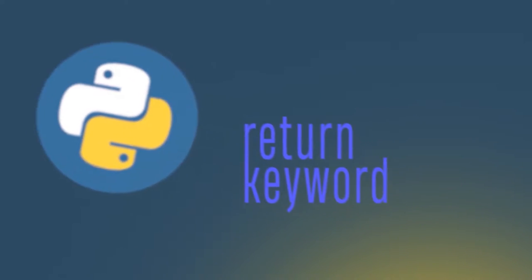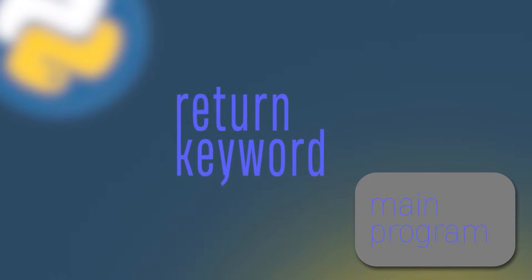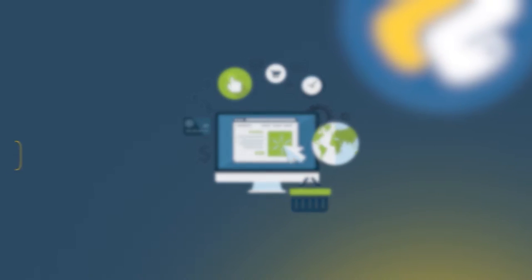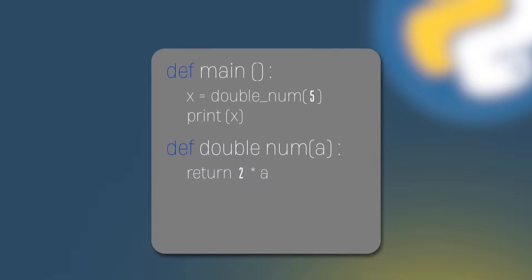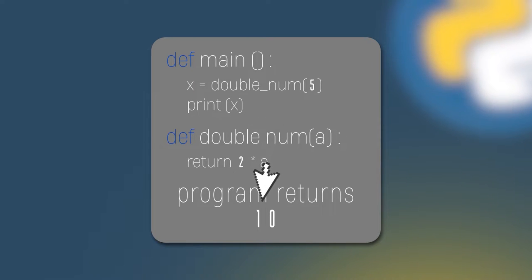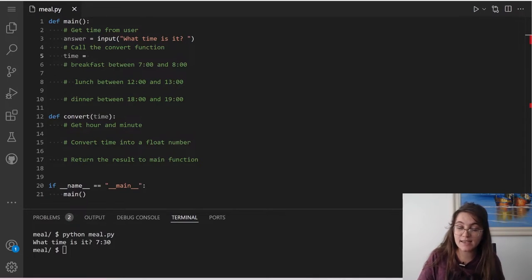The return keyword in Python exists in a function and tells Python to run the rest of the main program. A return keyword can send a value back to the main program. While values may have been defined in a function, you can send them back to your main program and read them throughout your code. For example, if we create a function called doubleNum that multiplies the received number by 2, and we pass 5, it returns 10. Then the variable x will hold the value 10.